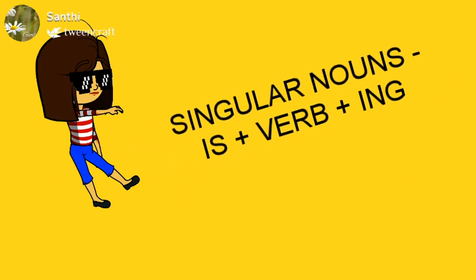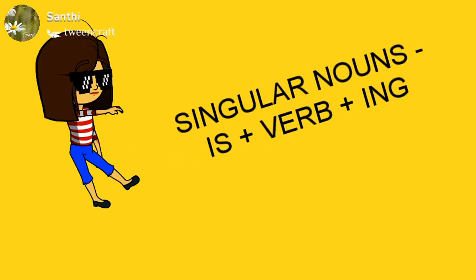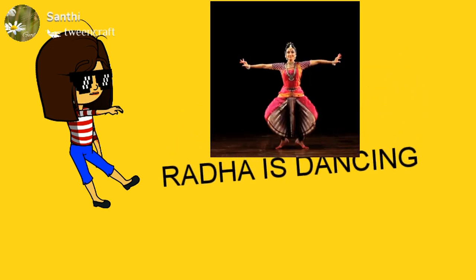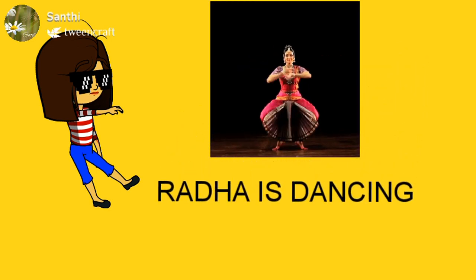For singular nouns, we have to use is and add ING with the verb. For example: Radha is dancing.